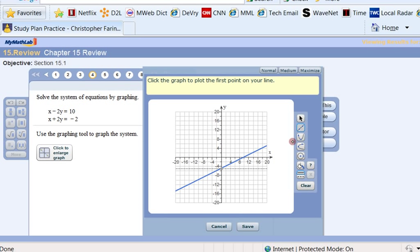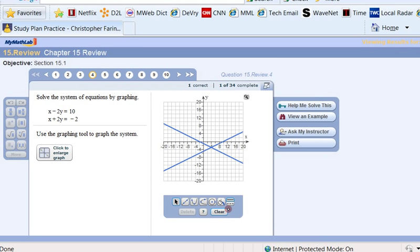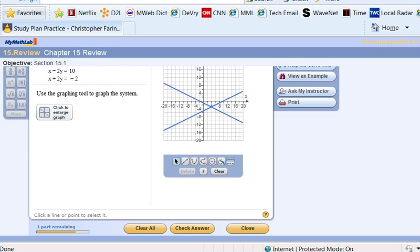The second one, we had an x-intercept of negative 2 and a y-intercept of negative 1. Well, I'm going to have a really tough time doing negative 1. There it is. You can kind of see it up here when it plots the point. All right. So let me check that one. All right.